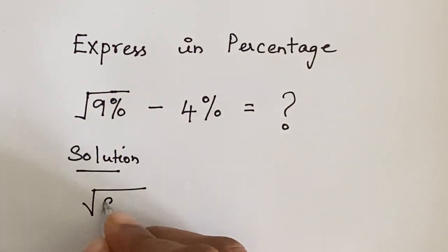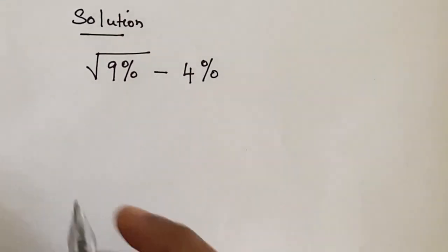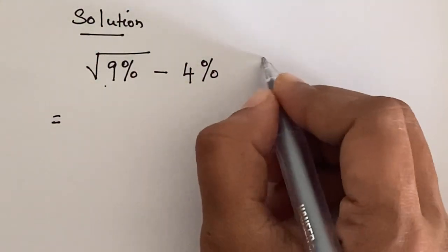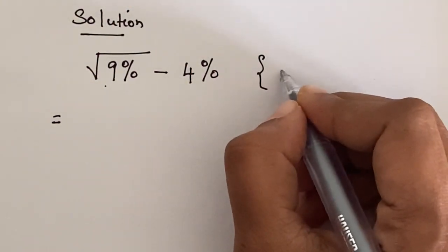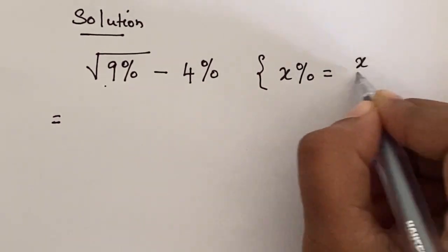Square root of 9 percentage minus 4 percentage equals, here 9 percentage can be written as, suppose if we have x percentage, it can be expressed in the form x over 100.